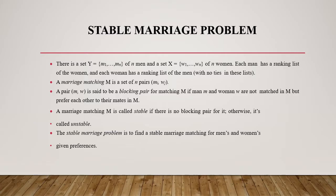So what is the stable marriage problem? There is a set Y which consists of N number of men and a set X which consists of N number of women. Each man has a ranking list of the women and each woman also has a ranking list of the men with no ties in their list. A marriage matching M is a set of pairs MI, WJ. So we are going to pair each woman with men based on the preference list.